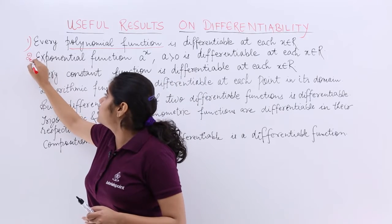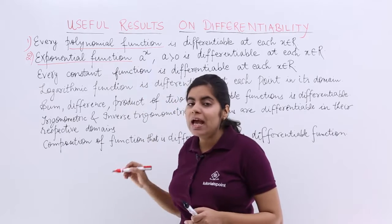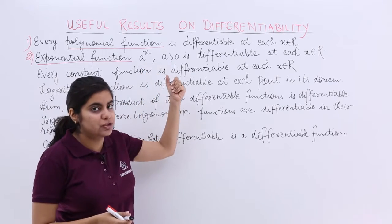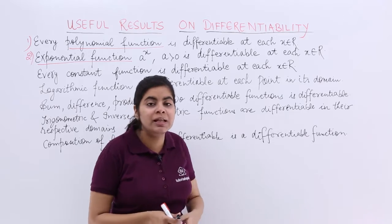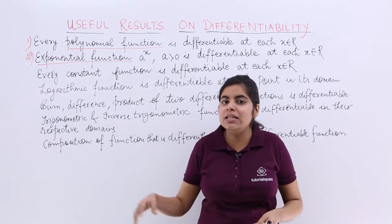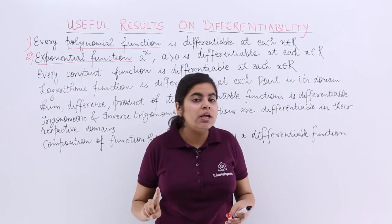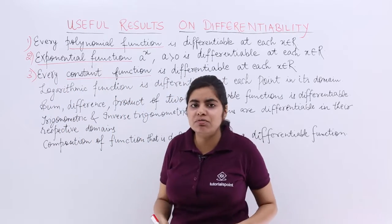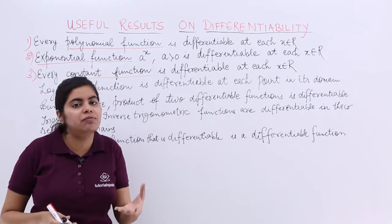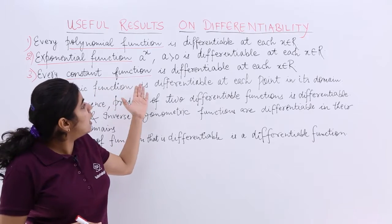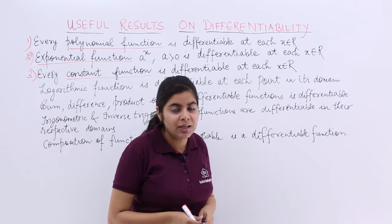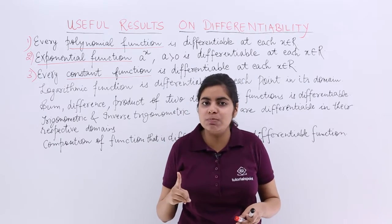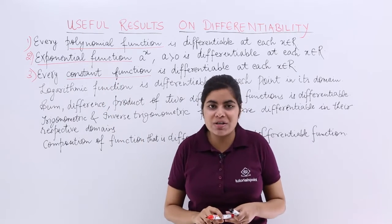The next point is about the exponential function. The exponential function is of the type a raised to the power x, where a is greater than 0. The exponential function is also differentiable at each x belonging to ℝ. Similarly, any constant function — like f(x) = 5 or f(x) = 55 — is also differentiable at each x belonging to ℝ. So three things to remember: polynomial, exponential, and constant functions are all always differentiable.